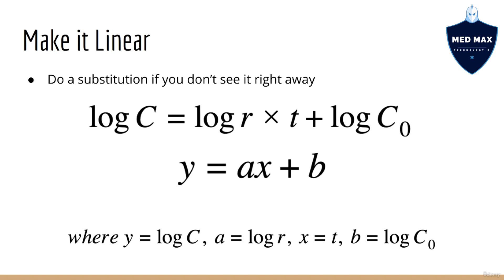If you can't see how this works right away, it might help to substitute the variables in the previous equation with some more familiar variables. So let's replace log c with y. This will be the output variable. Let's replace log r with a, the slope. Let's replace t with x. This will be the input variable. And finally, let's replace log of c0 with b, the intercept. Now we just have y equals ax plus b, which is our linear equation from earlier. Note that I'm using the letter a instead of m for the slope, which is perfectly okay.